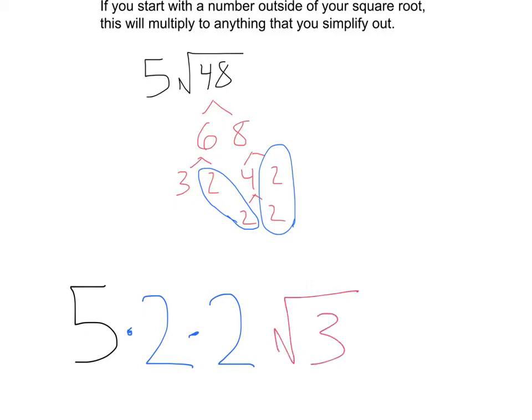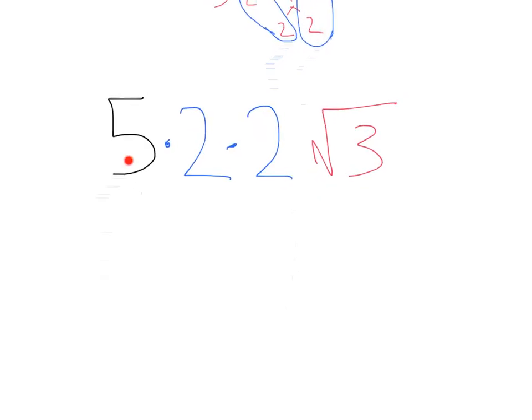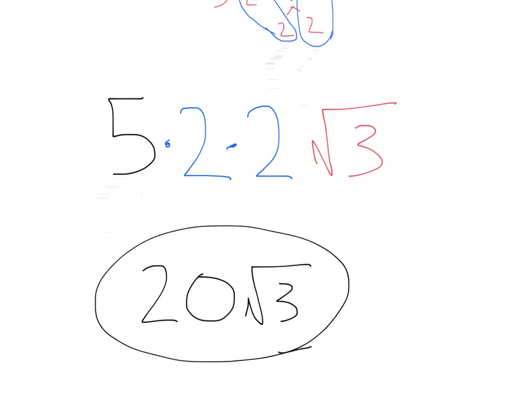So I'll put the square root of 3. Now, if I want to simplify that, I have 5 times 2 is 10, times 2 is 20. I'm going to have 20, and inside my square root, there's just a 3 by itself. So, 20 square root of 3, and there you go.